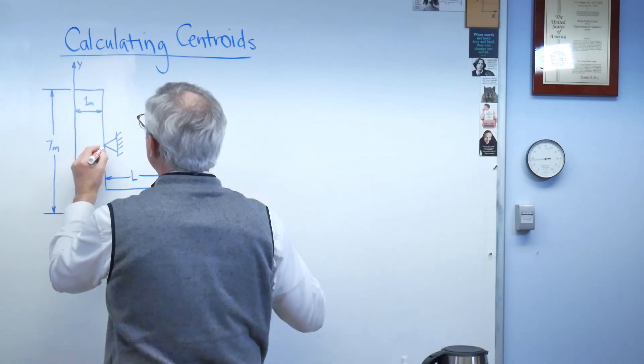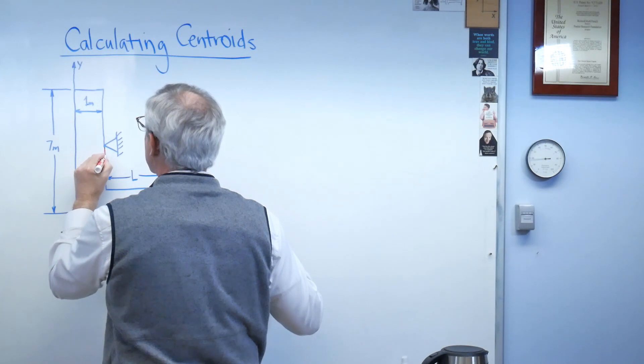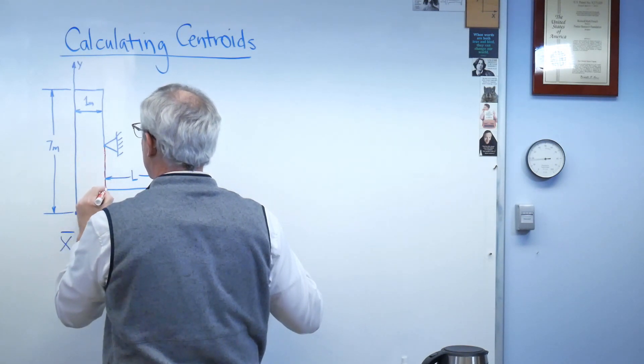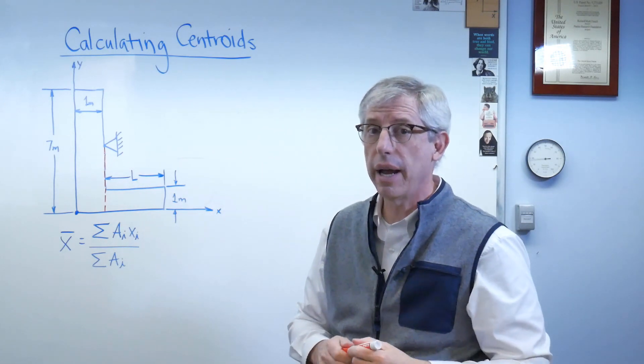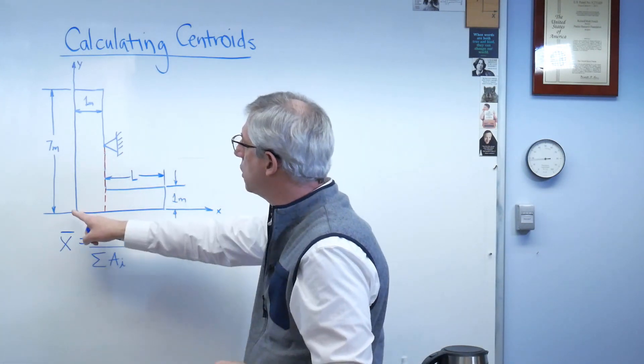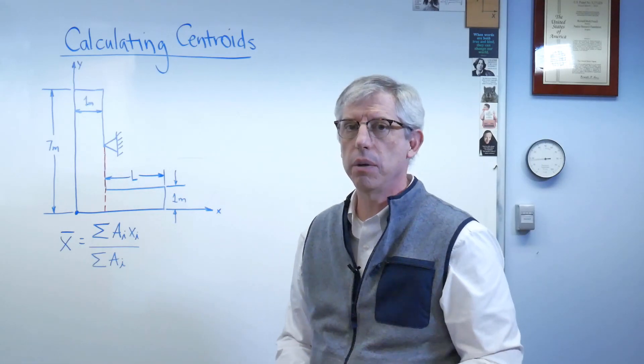So let me put a dotted line here. There. The centroid has to lie along that, so I already know that if that's my origin, x-bar has to be one meter.